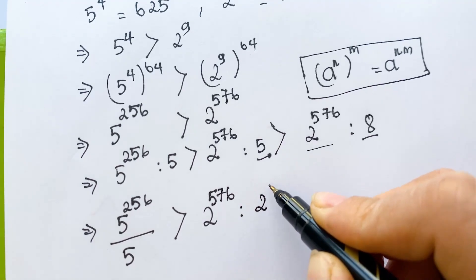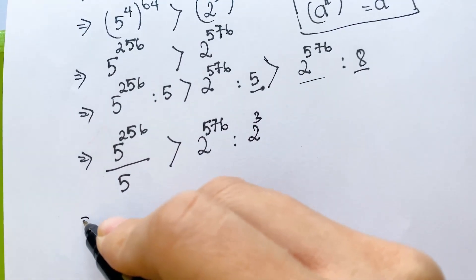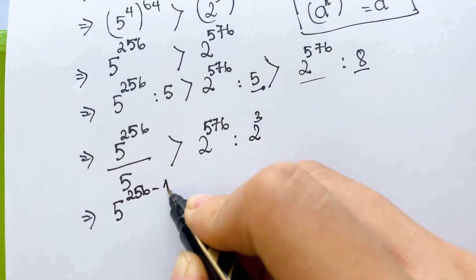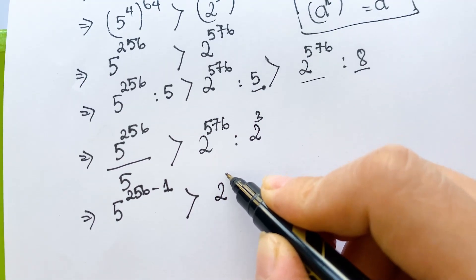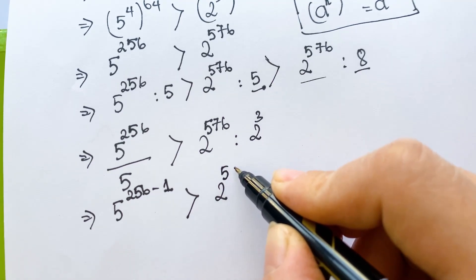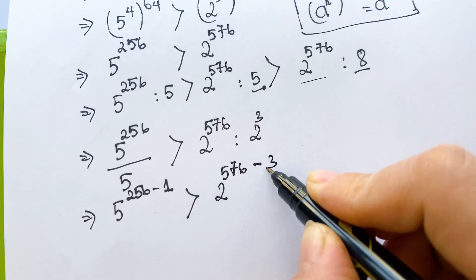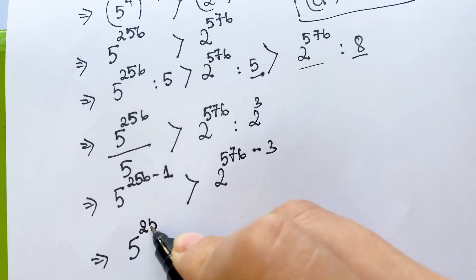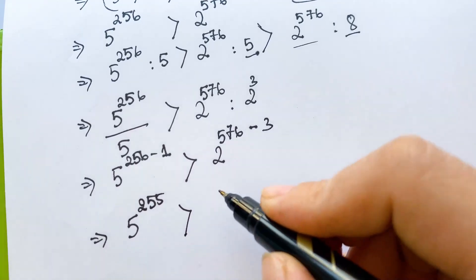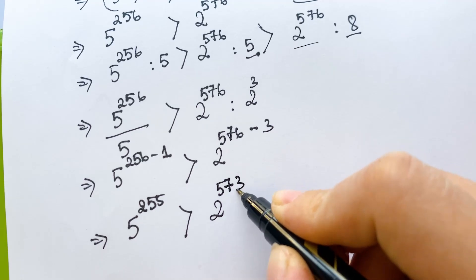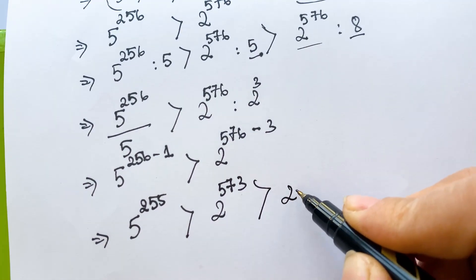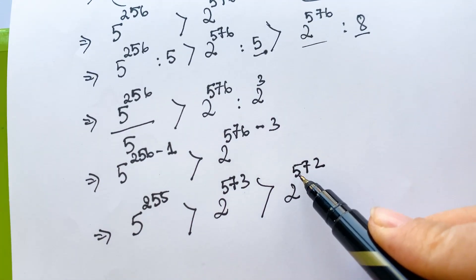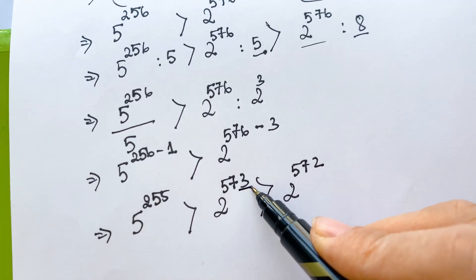Therefore we have 5 power 2256 minus 1 is greater than 2 power 576 minus 3. That gives us 5 power 2255 is greater than 2 power 573, because 572 is smaller than 573.